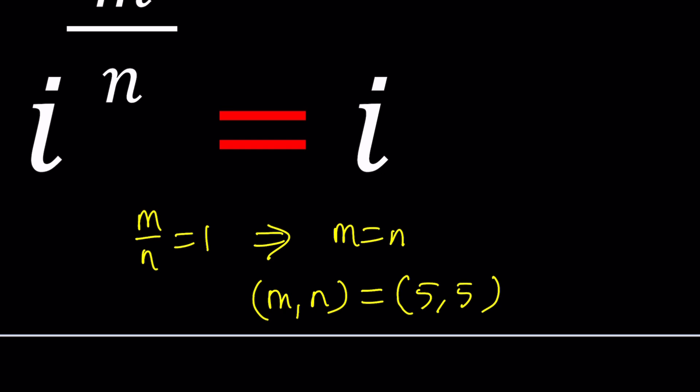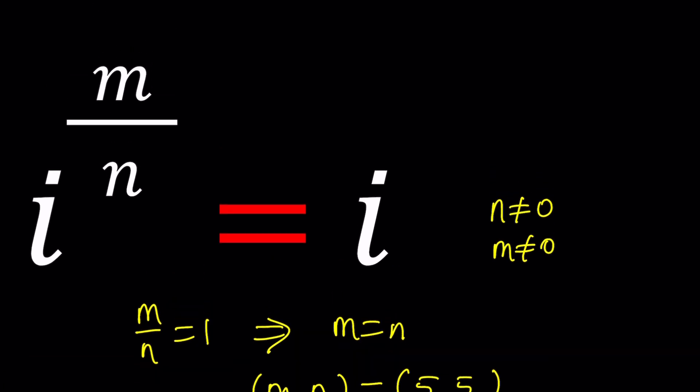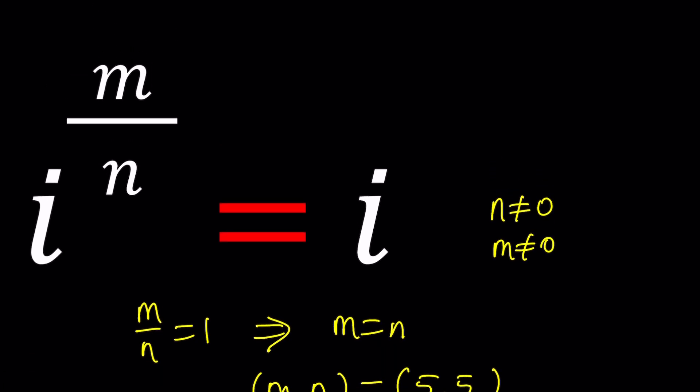Some people call it indeterminate because that's something that cannot be determined, it's a limit most of the time. So if n is zero we have a problem, so m cannot be zero either. M and n both have to be different from zero. If they're equal we have a solution, but that's too trivial.